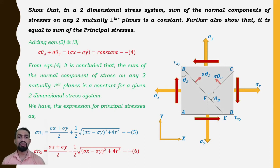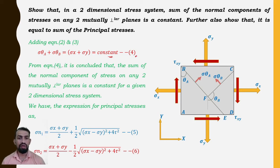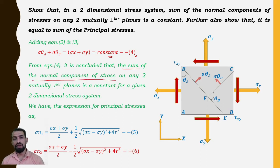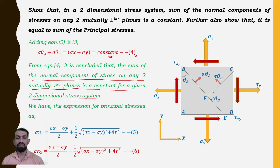Adding equations 2 and 3, we get: σθ_a + σθ_b = σx + σy, which is a constant. From equation 4, it is concluded that the sum of normal components of stress on any two mutually perpendicular planes is constant for a given two-dimensional stress system.